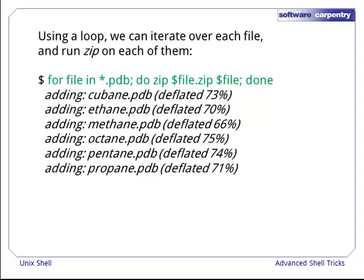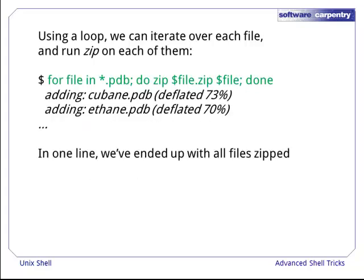The zip command runs thus six times, once for each PDB file, generating a new zip file for each of them. So with 100 such files, this would be much more efficient than running zip individually each time.